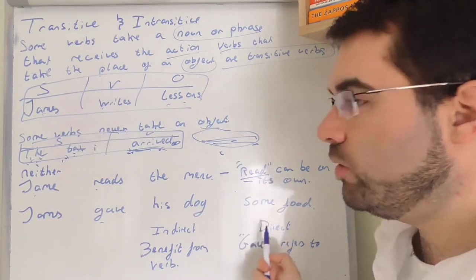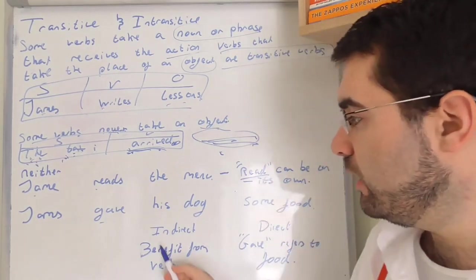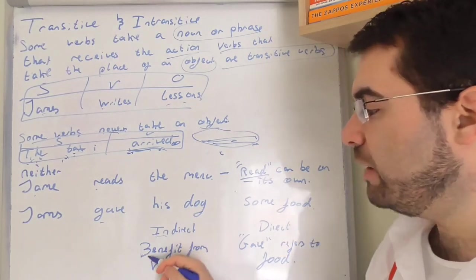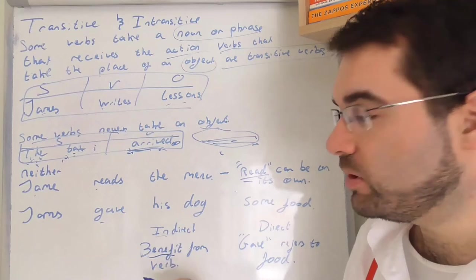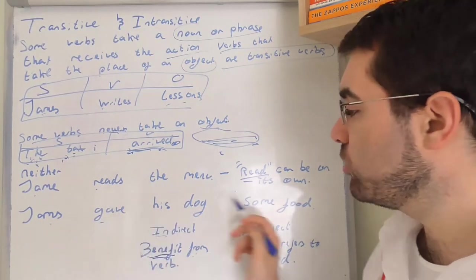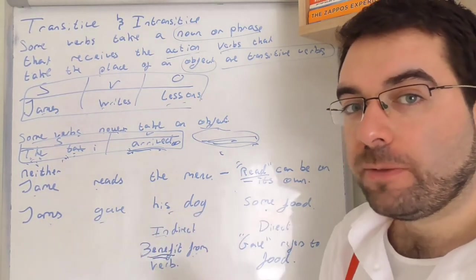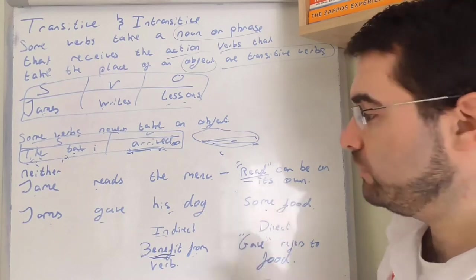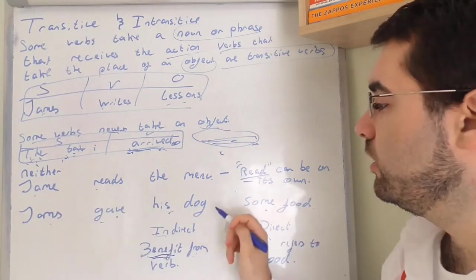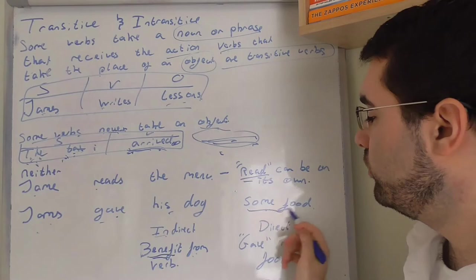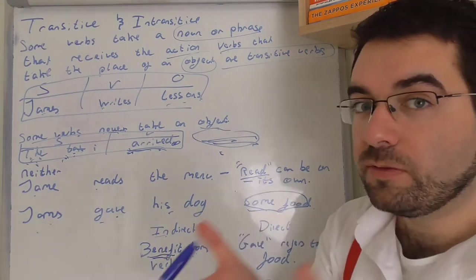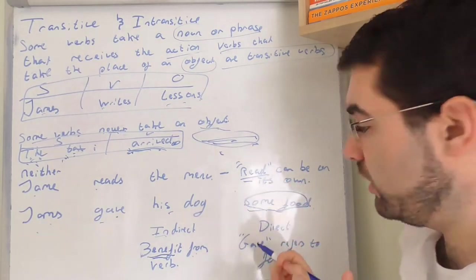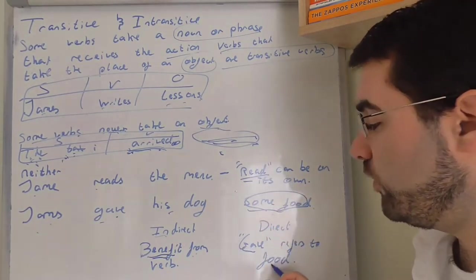James gave his dog some food. And then suddenly we have indirect and direct verbs. Direct, indirect, meaning object. Indirect objects, benefiting from the verb. So James gave some food to his dog. The verb is being applied to the food, but his dog is benefiting. It's an indirect object. James gave food. James gave some food. Some food. He's giving. The action is being applied to this object. Some food. Direct object. Give refers to the food.